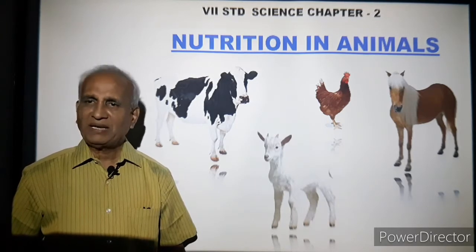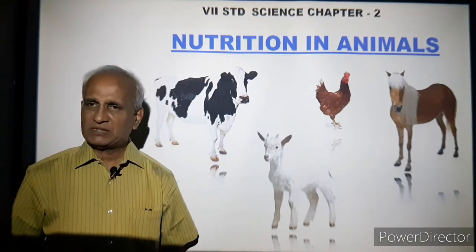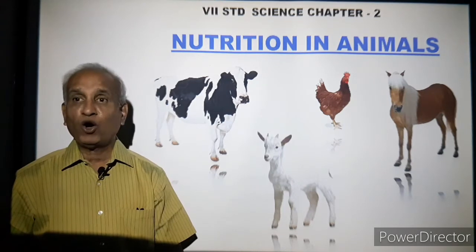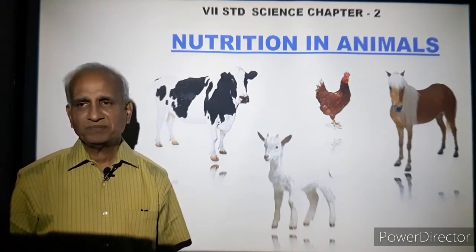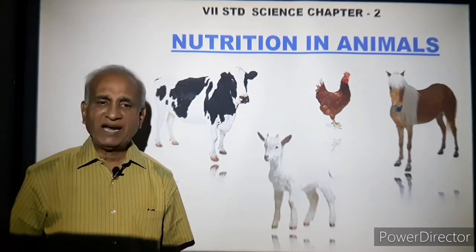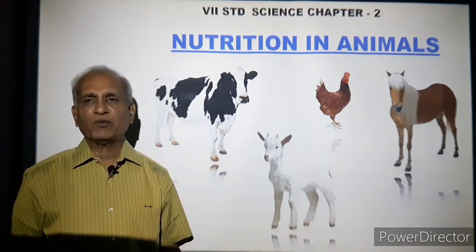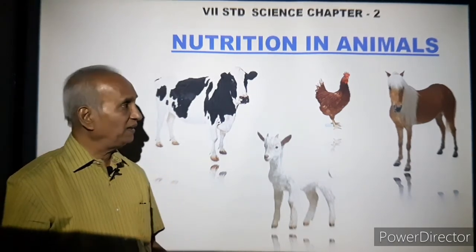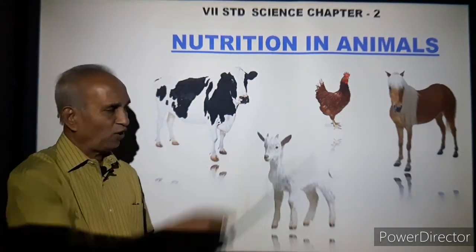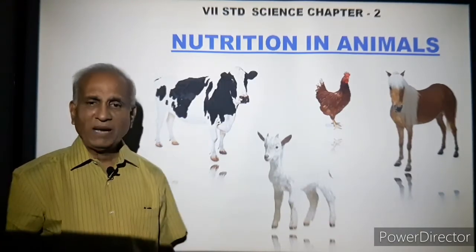But animals are not like that. Animals may be herbivores, carnivores, or omnivores. Animals that depend on plants for their food directly are called herbivores. For example, you have the cow, the goat, the horse — they are all herbivores.